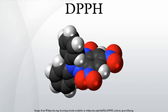Because of a strong absorption band centered at about 520 nanometers, the DPPH radical has a deep violet color in solution, and it becomes colorless or pale yellow when neutralized. This property allows visual monitoring of the reaction.